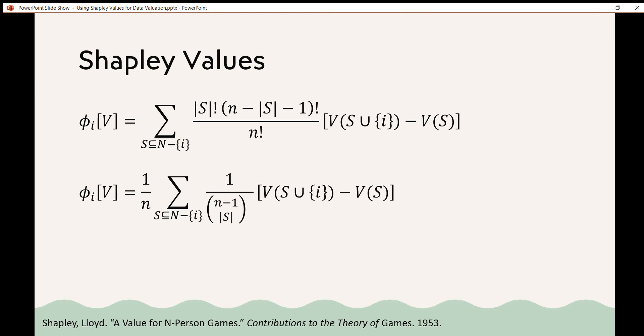So phi i can then be written as 1 over n times the sum of all subsets s in n minus i of 1 over n minus 1 choose the size of s times the value of s union i minus the value of s. And this makes it a little bit clearer to see the intuition behind this. You can see the second term where the values are subtracted looks at the marginal contribution of player i to all subsets. And then the first term weights these differences to be inversely proportional to the number of subsets of the same size.